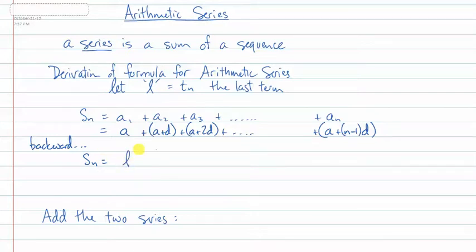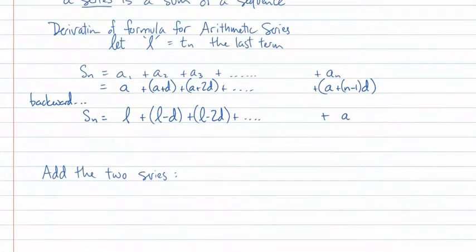Now I'm going to write the same progression, but this time I'm going to write it backwards. Starting with the last term, the next term would be the last term minus a difference, the next term would be a last term minus two differences, and so on, and I would end up at the first term. What I'm going to do is I'm going to add these two series together now, term by term, and we're going to see a pattern emerge.